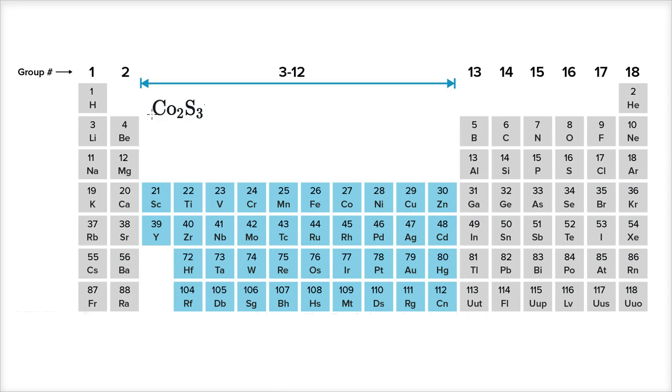Well, the convention is the first element to be listed is going to be our cation. And if we look at cobalt over here, we see that it is a D-block element. And D-block elements are tricky because you don't know exactly how it will ionize. So we know that this is going to be our cation, our positive ion. But we don't know what the charge on each of those cobalt is actually going to be.